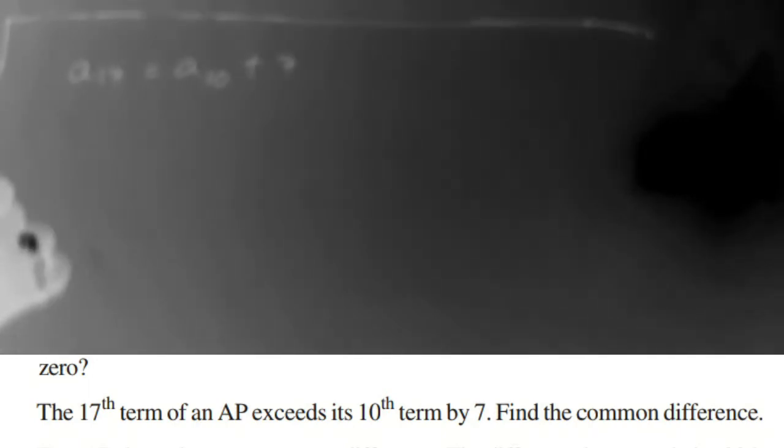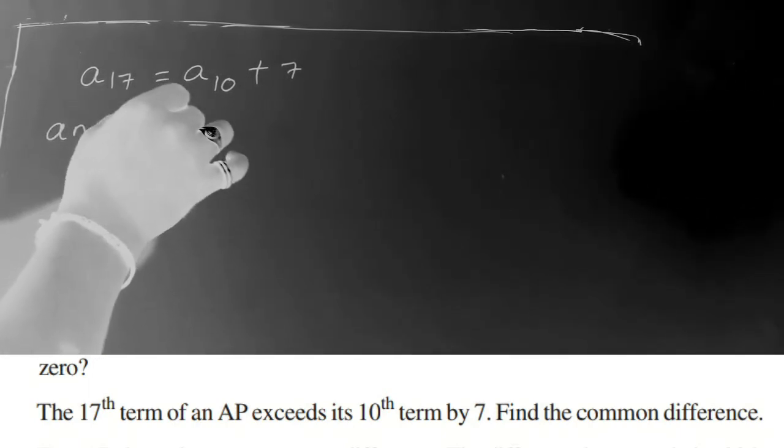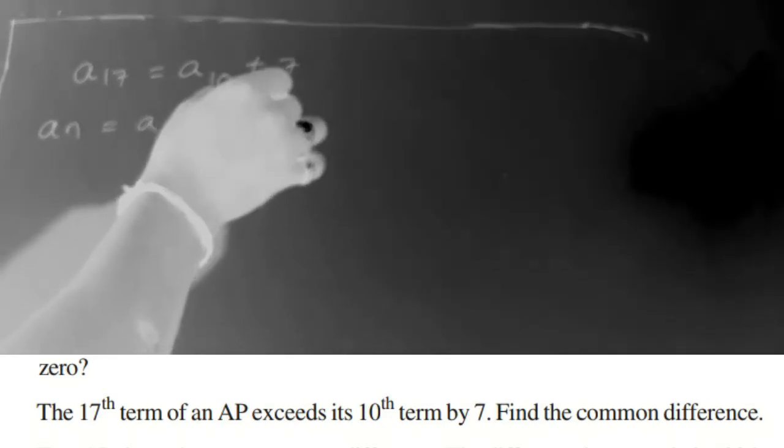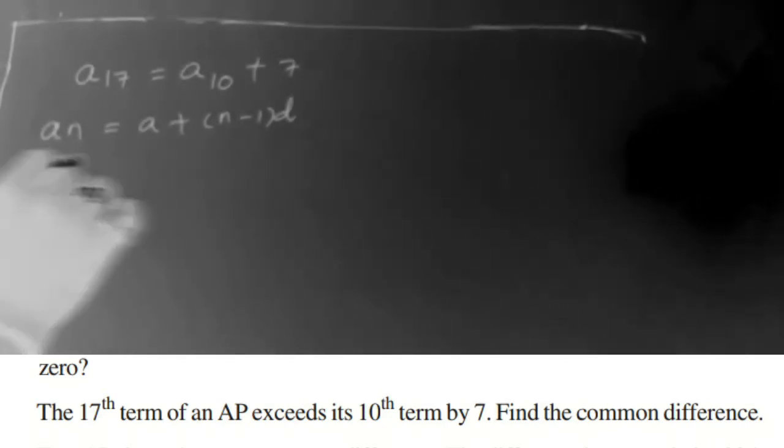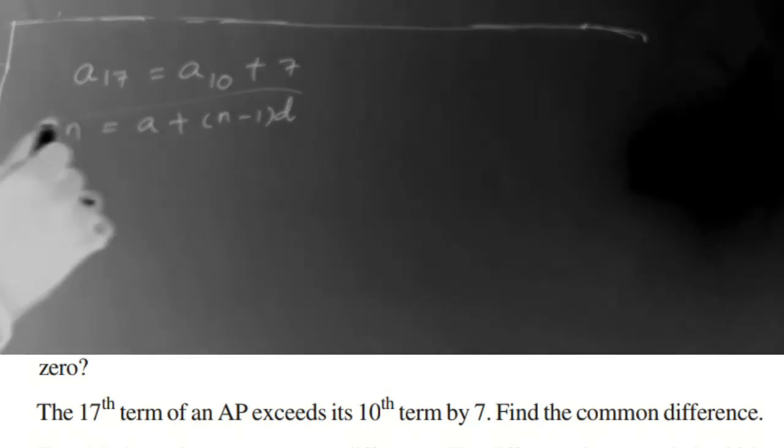We know that an is nothing but a plus n minus 1 times d. So this is the last term formula, or nth term formula, or general term formula of an AP series.